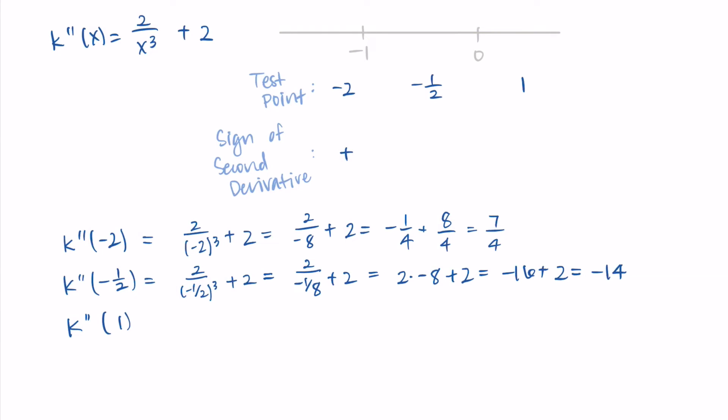At x = 1: 2/(1)³ + 2 = 2 + 2 = 4 — a positive value, so the function is concave up in that final interval. Feel free to pause and work through any of these steps if you need to review working with fractions. The conclusion is that the function is concave up in the first and last intervals and concave down in the middle.